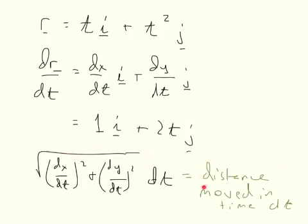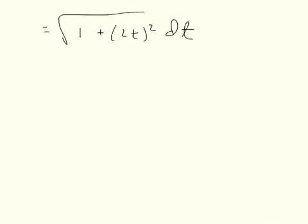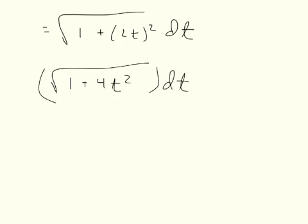We plug in dx dt, which was 1, and dy dt, which was 2t, and we find this expression. We get the square root of 1 plus 4t squared dt, and that's the distance that we move along this curve when we move for time increment dt.